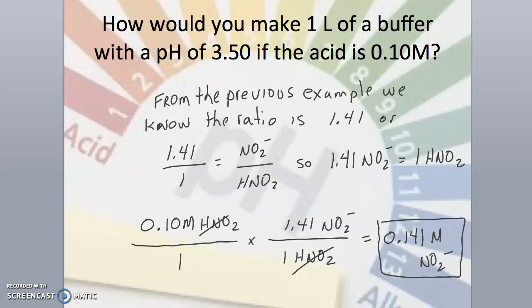So this is very similar to the previous question, except this question tells us the concentration of the acid desired at 0.10 molar. So here I'll use the ratio of base to acid as a factor, and I can solve for the amount of base needed, 0.141 molar.